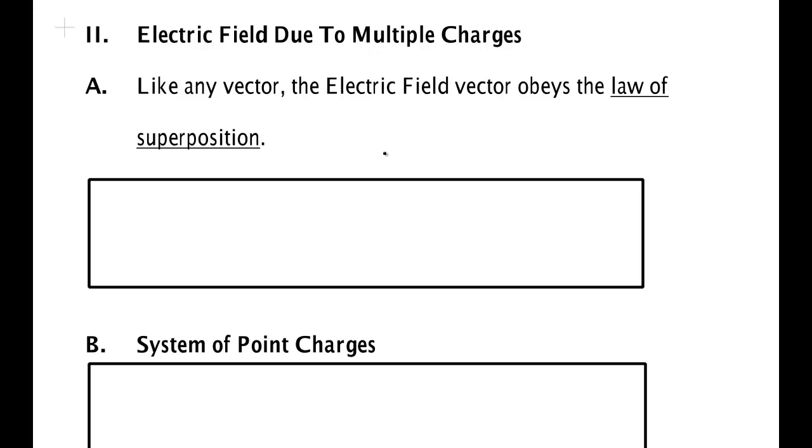Now what happens if you don't have just one point charge but you have a couple? Let's say that you have q1 here, maybe q1 happens to be plus 2 nanocoulombs, and then over here you have another charge, maybe q2 happens to be minus 3 nanocoulombs, and maybe even there's another charge up here q3, that's 2 nanocoulombs, and you now want to calculate the electric field at some point right here.